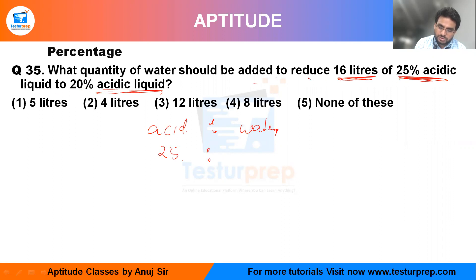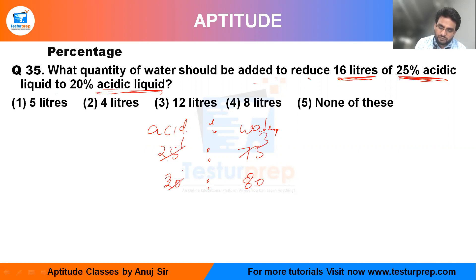That means it is 25% acid and the water will be 75%. For 20% acidic, it is 20% acid and 80% water. Let me take the ratio A1 to A4. This is the ratio value.